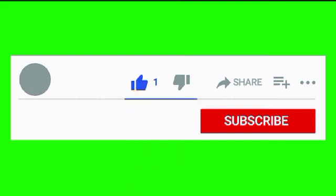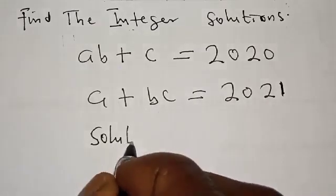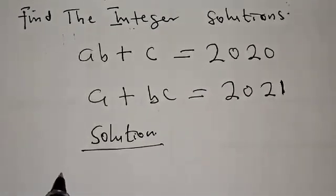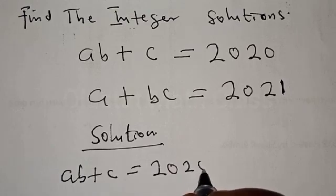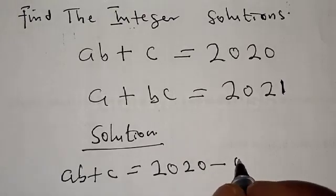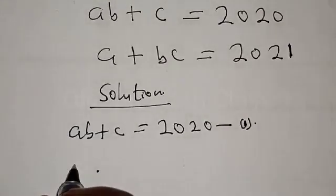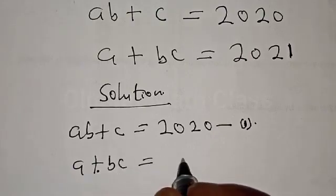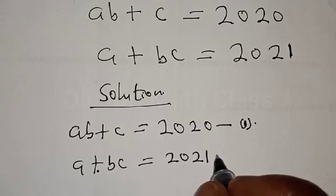Please don't forget to like, share, comment and subscribe. Thank you. Solution. We have AB plus C equal to 2020 — let's call this equation 1. Then we have A plus BC equal to 2021 — let's call this equation 2.